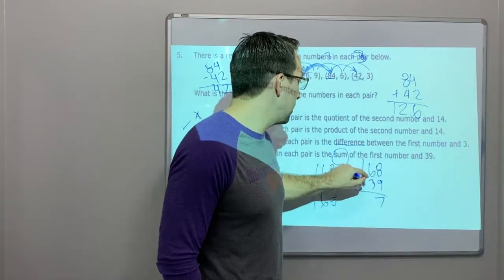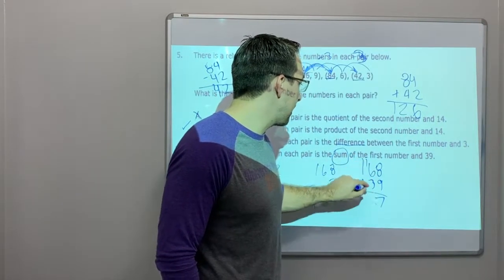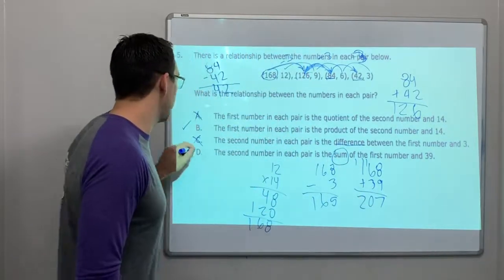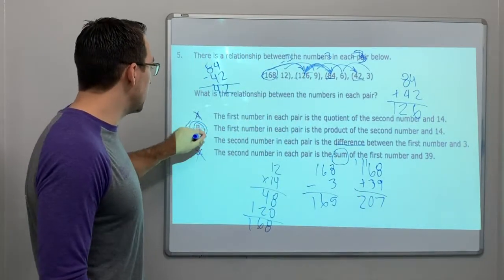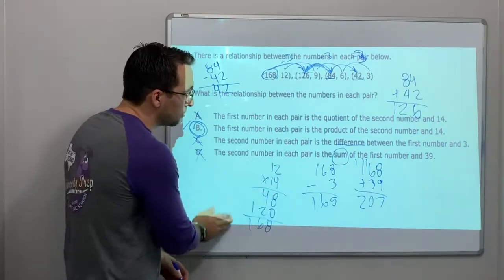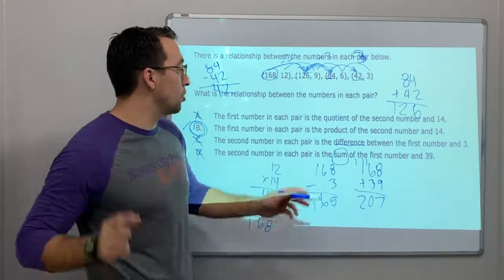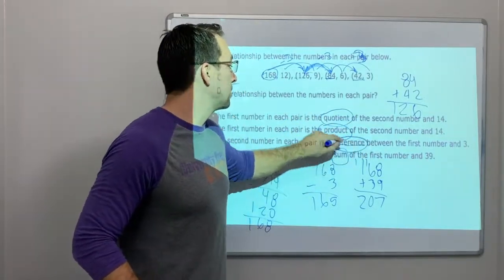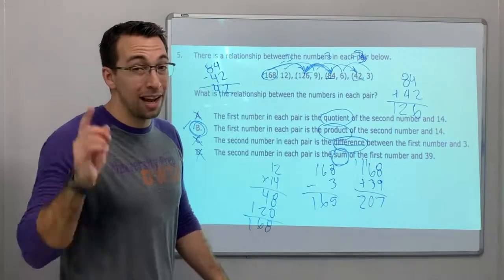The second number in each pair is the sum, that's addition, of the first number and 39. No. What is 168 plus 39? Is 17, 1 plus 6 is 7, plus 3 is 10. 207. That's not right. The answer is B. You read the question, you do some scratch work. You had to know quotient is division, product is multiplication, subtraction, addition. You had to know vocab here.